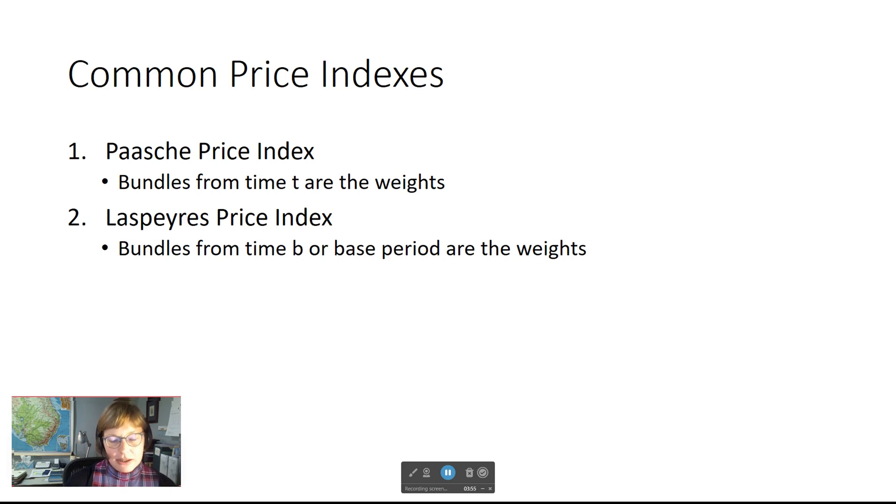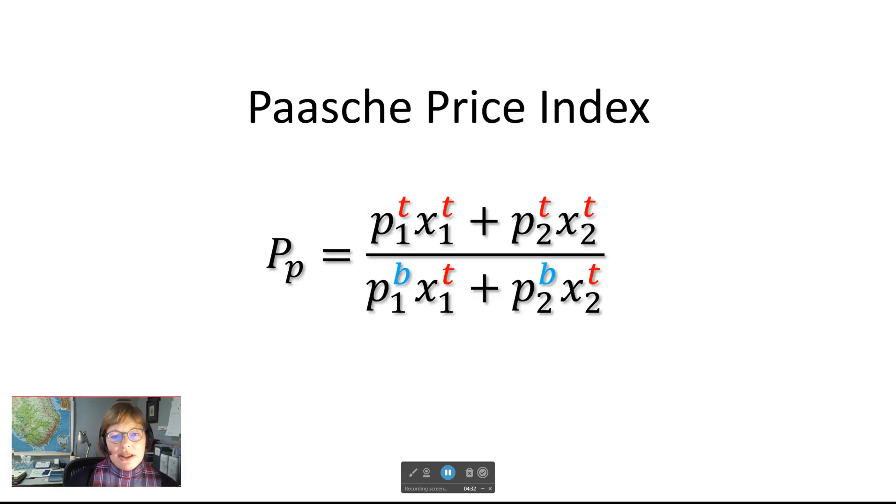They differ in their time orientation. The Paasche index uses the bundle consumed at time t as the weights. If you construct what I will call a backward-looking Paasche index, the period t is the current or recent period, and you are comparing it to the affordability of the current bundle in the past period or base period b.